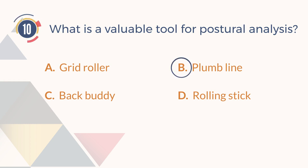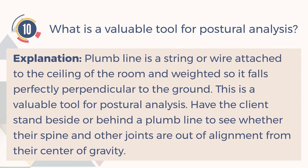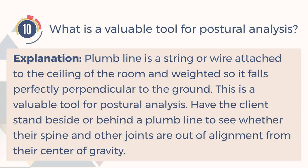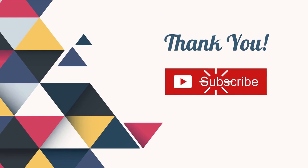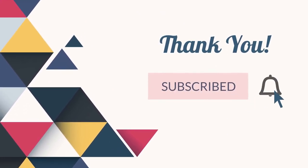The correct answer is B. Plum line. Explanation: A plum line is a string or wire attached to the ceiling of the room and weighted so it falls perfectly perpendicular to the ground. This is a valuable tool for postural analysis. Have the client stand beside or behind a plum line to see whether their spine and other joints are out of alignment from their center of gravity. Thanks for watching. Don't forget to like, share and subscribe to our channel for updated videos every week.